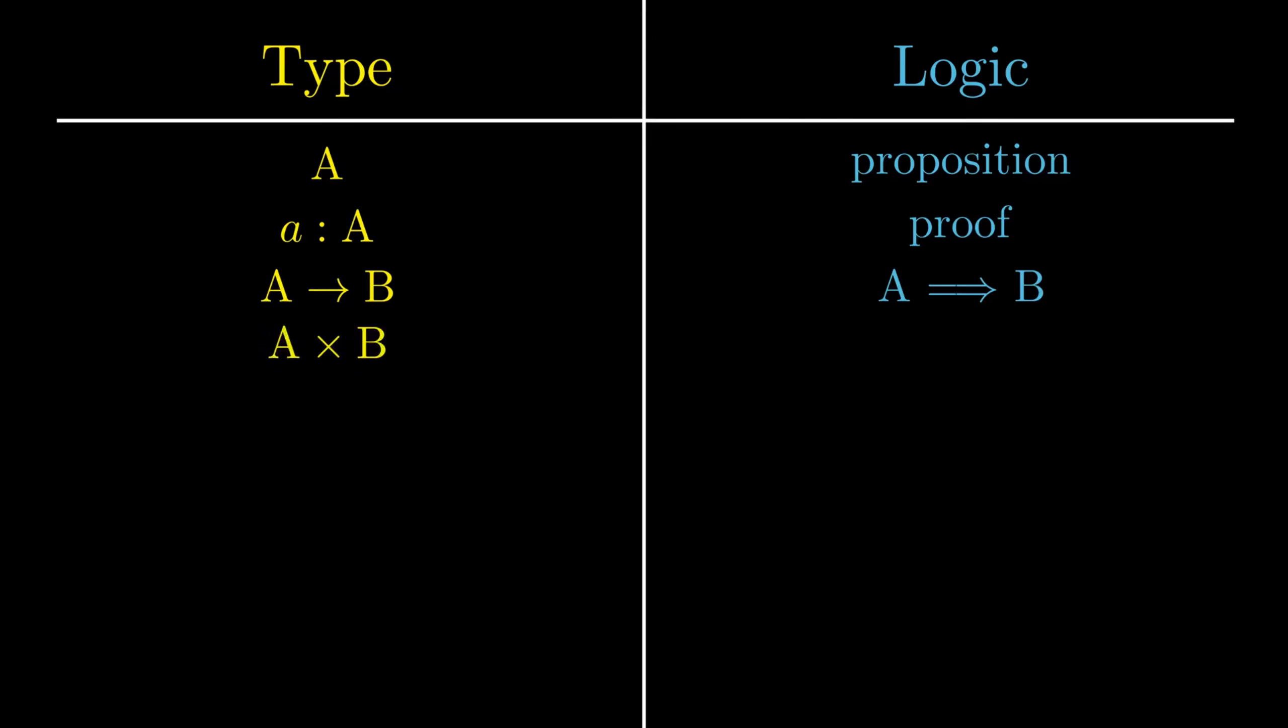A times B also can be interpreted as a logical proposition. Can you see which one? It's the logical AND. Because in order to have an element of type A times B, you need both an element of A and an element of B. So in terms of logic, that means in order to prove A and B, you need a proof of A and a proof of B.